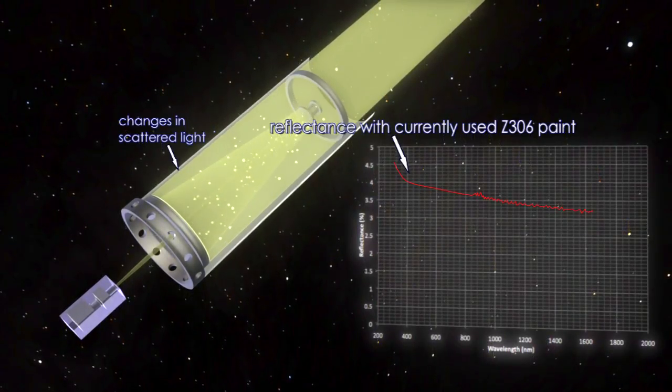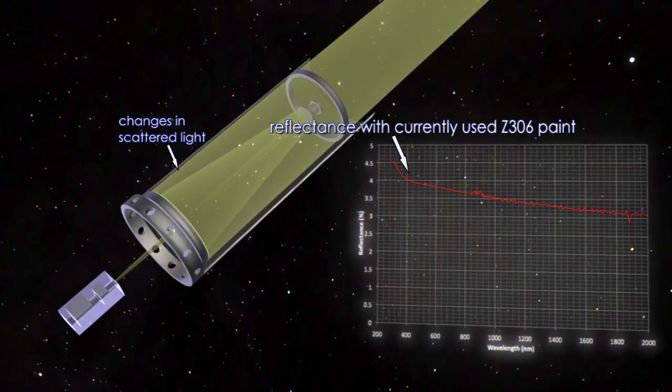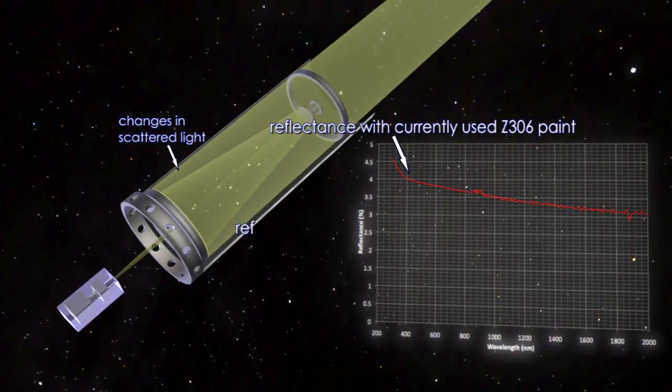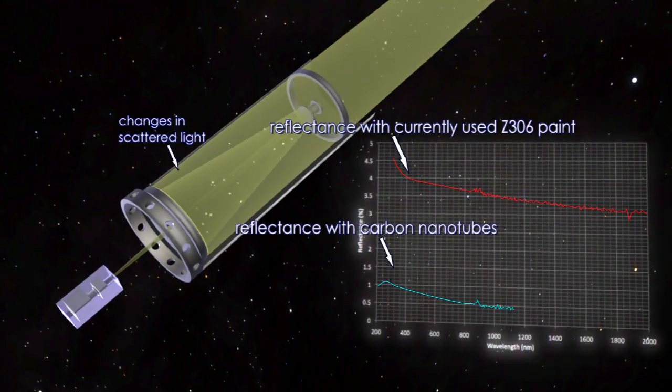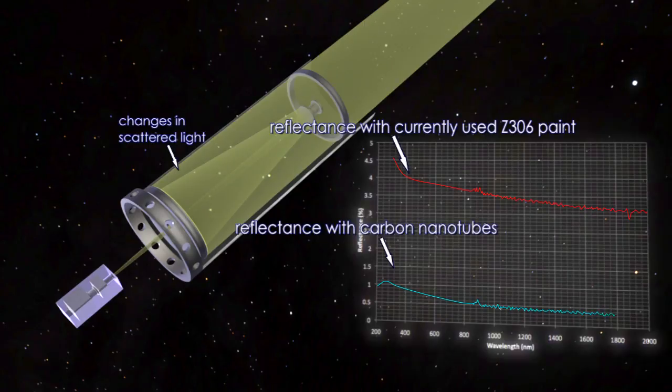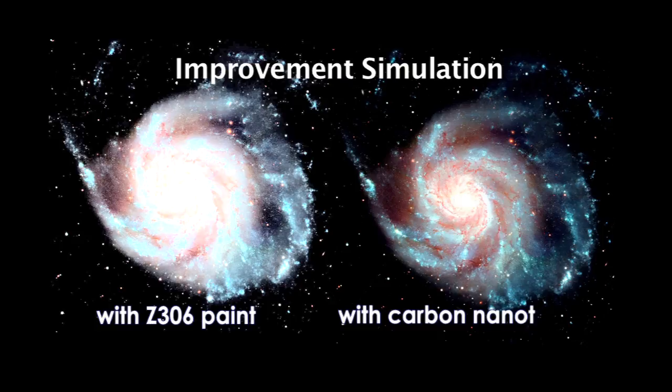So the current telescopes use black paint to reduce the reflection, but the black paint isn't perfect. It still shows a reflection. Over the course of our work, we were able to optimize the carbon nanotubes to make them ten times darker than the paint. You could get a better observational efficiency. You're not throwing away 40% of your data.